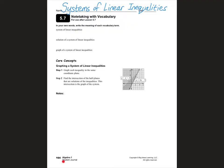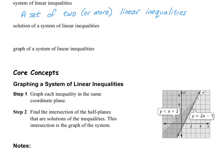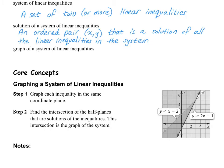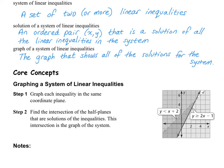Please open up your journals to page 164. A system of linear inequalities is a set of two or more linear inequalities put together in a system. A solution of the system of linear inequalities is any ordered pair, always written in the form (x, y), that is a solution of all of the linear inequalities in that system. The graph of a system of linear inequalities is the graph that shows all of the solutions for the system.